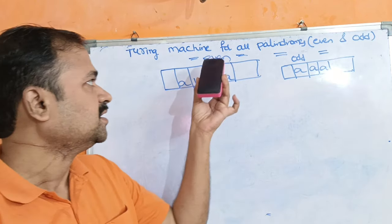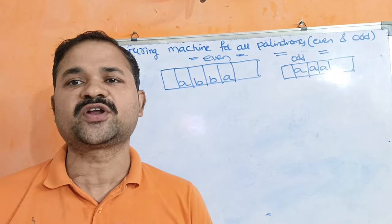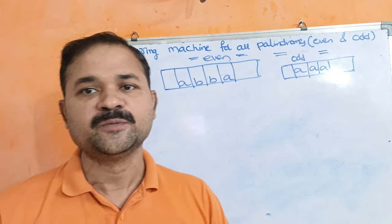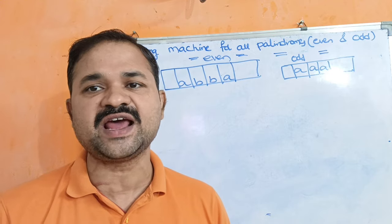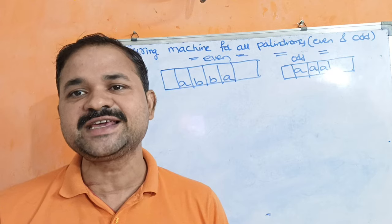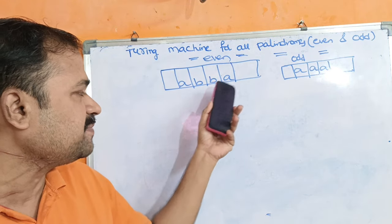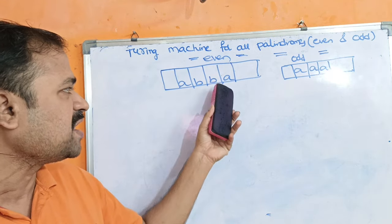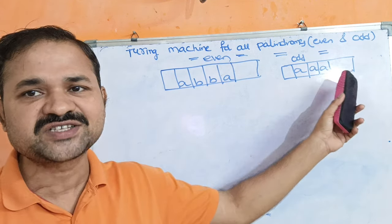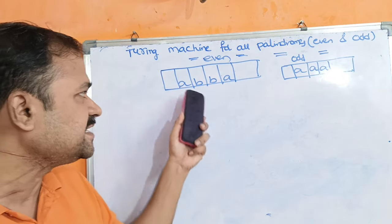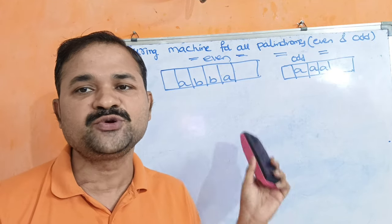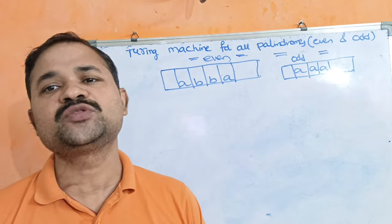Let's design a Turing machine for all palindromes. Our Turing machine has to accept both even palindromes and odd palindromes. A palindrome is a string whose reverse equals the given string. For example, ABBA is an even length palindrome, and TRIBULIA is an odd length palindrome. Our Turing machine has to accept both strings.